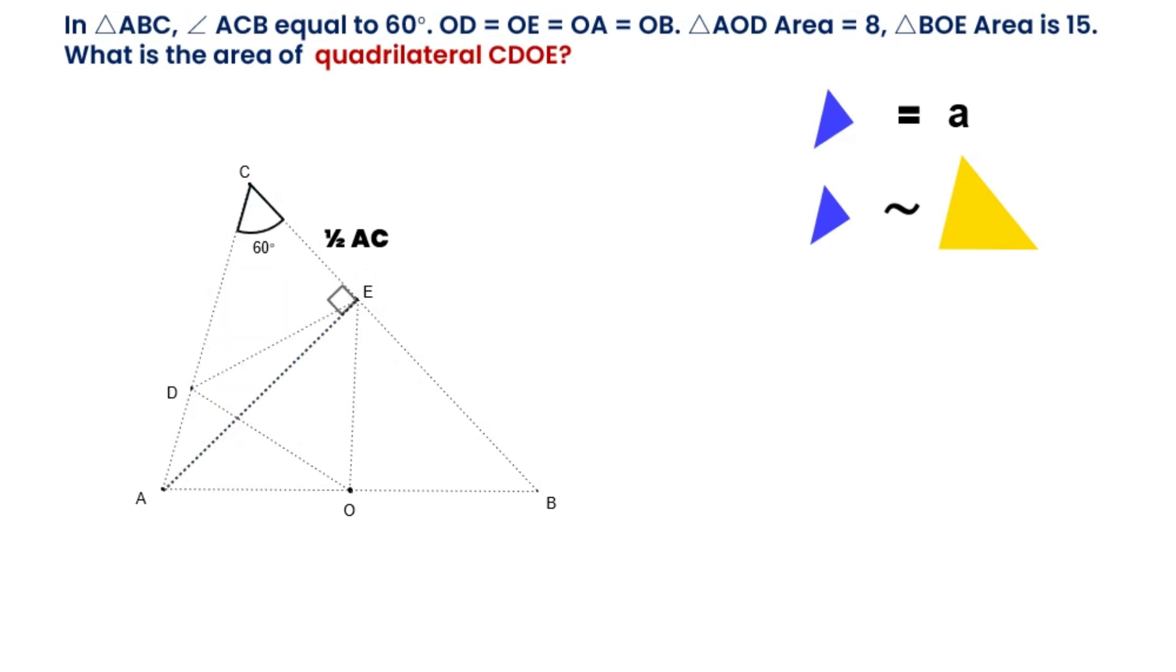The similarity ratio between the sides of triangle CDE and triangle CBA is equal to 1 over 2. Their area ratio is equal to 1 over 4. Area of CBA is 4 times A.